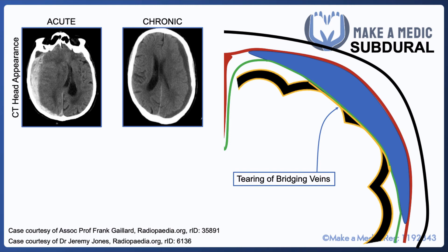Blood initially will appear hyperdense, however after it gets broken down over time, it becomes hypodense. We can see that the shape of the bleed is different in the subdural, because it isn't encased to the skull by the dura — it's actually between the dura and the arachnoid layer — and so it creates this crescent-shaped pattern instead of the convex pattern.